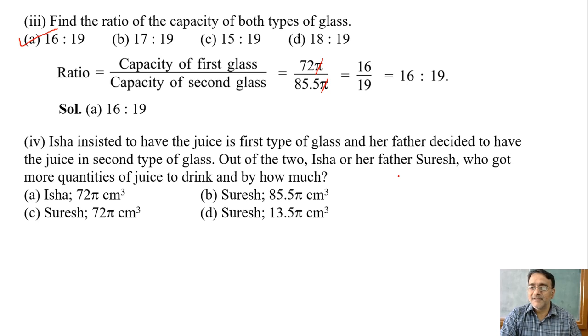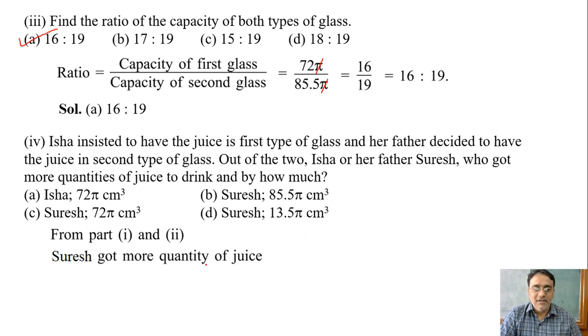Who got more? Suresh, her father. Right. By how much means we have to subtract. From parts one and two, we can subtract the two volumes. 85.5π minus 72π is 13.5π cm³. Which option is correct? Option D.